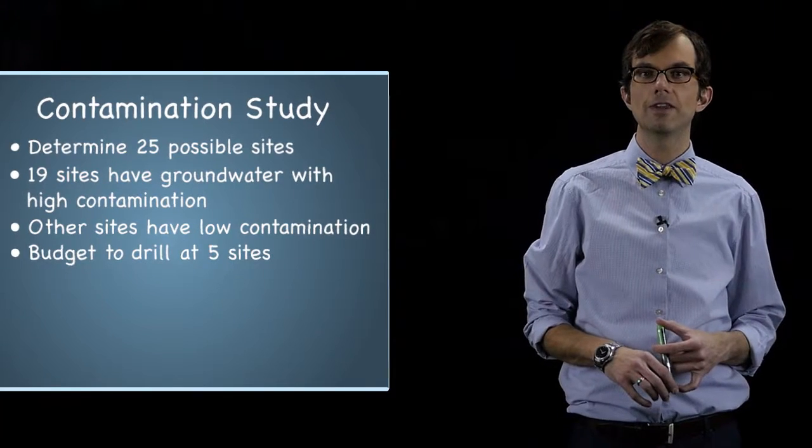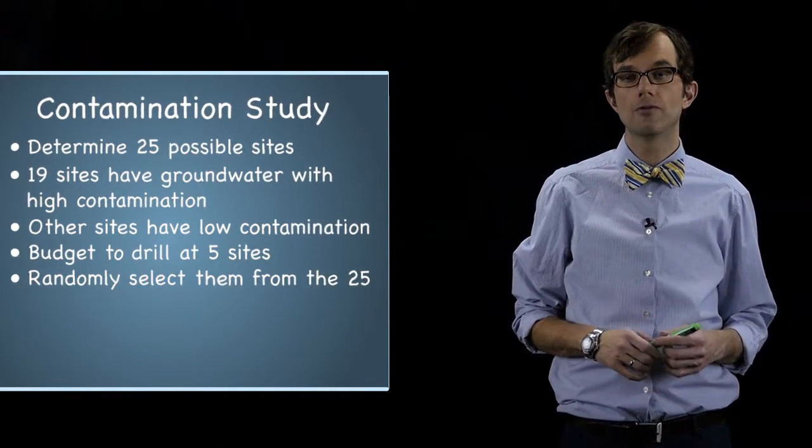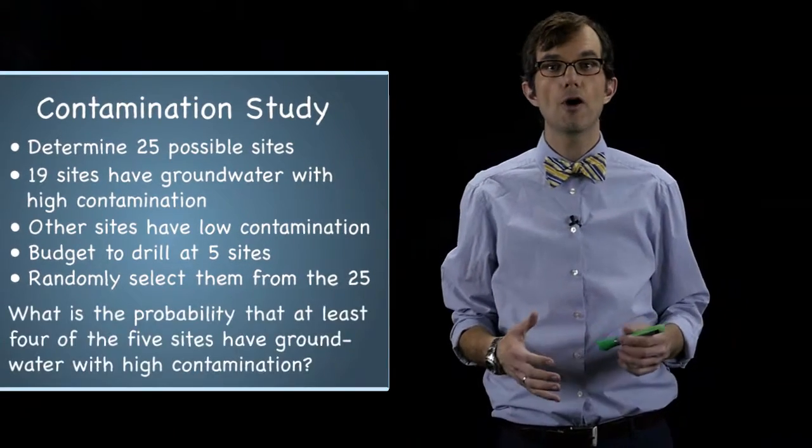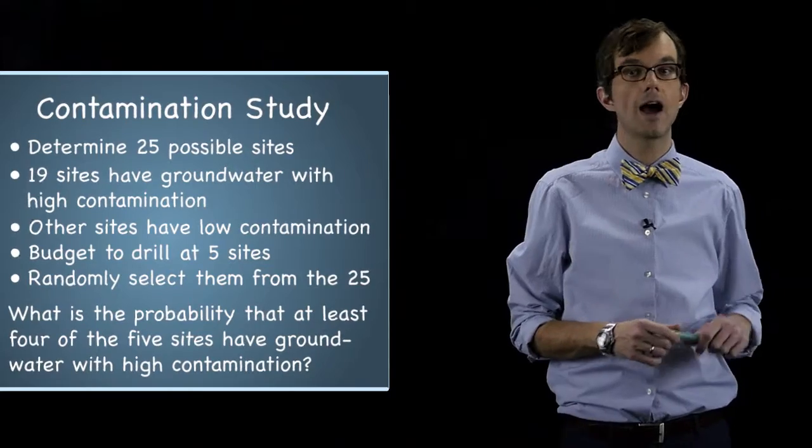The researchers have a budget that only allows them to drill at five sites, so they randomly choose them from the twenty-five. What's the probability that at least four of the five sites have groundwater with high contamination?